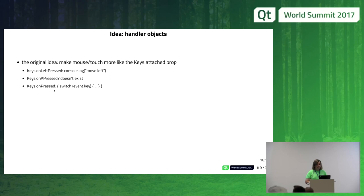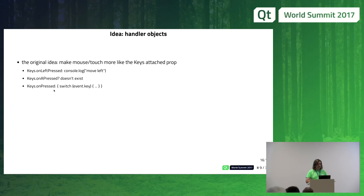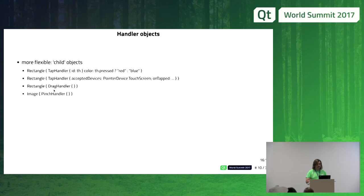The way it is now you typically have to write a lot of JavaScript. Another disadvantage of attached properties is you can only have one instance per item of a particular type. With handlers, it would be nice to make multiple instances for different cases. We have child objects, but they are not items, so they are a little bit lighter weight.